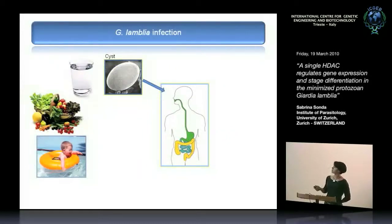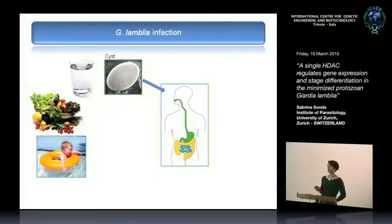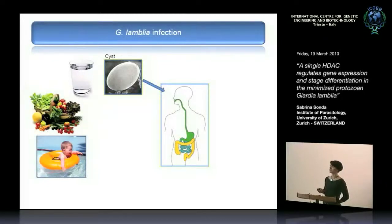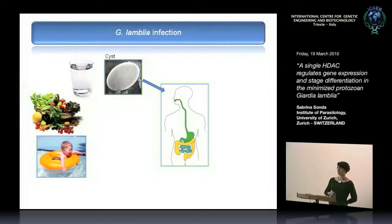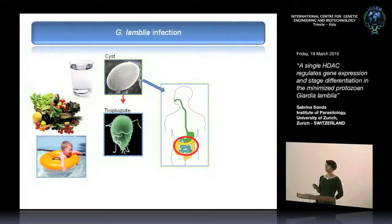How does infection occur? These are cysts that are environmentally resistant — surrounded by a thick cyst wall — and the parasite can survive for months or years in unfavorable conditions. These cysts are found in water, which is the major source of infection. If a water reservoir gets contaminated, you get large outbreaks even in developed countries. Contamination of vegetables and pools are also common sources. The infection occurs perorally, and when the parasites reach the intestine, a stage conversion occurs: the cyst becomes a trophozoite.